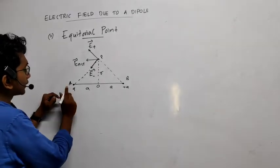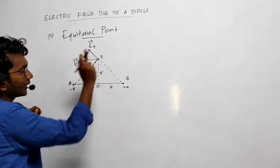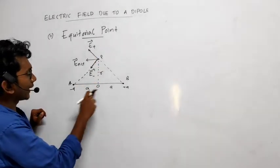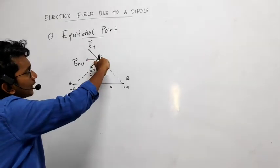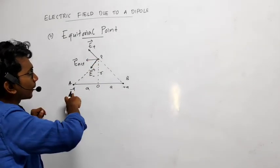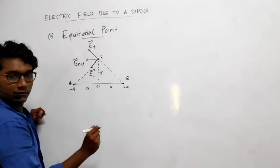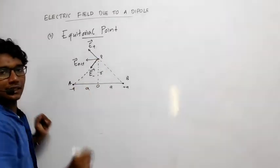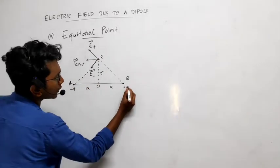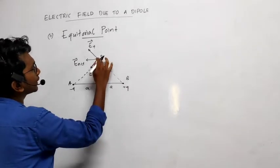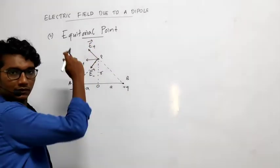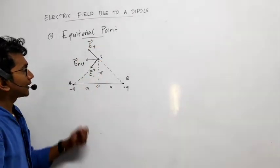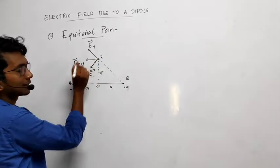Here we have minus q charge and plus q charge. The electric field at point B, which is at the distance R from the center — the electric field due to the minus q charge at P will be in the attractive direction, because when you put a small positive charge here, it will come toward the minus q. The electric field due to the plus q charge will be in the repulsive direction. So E plus and E minus are given, and the net electric field E_net will be in this direction.